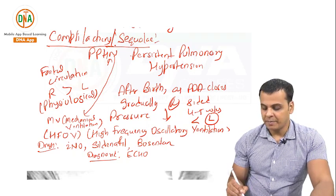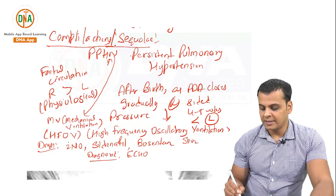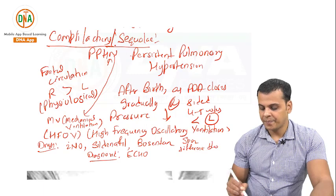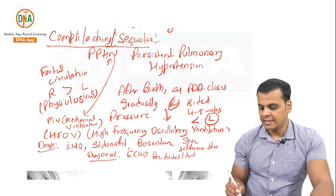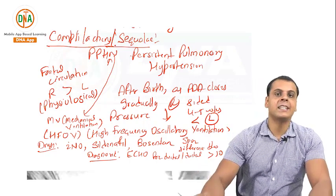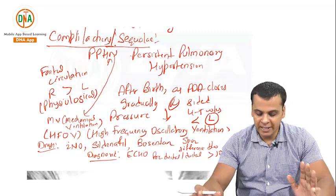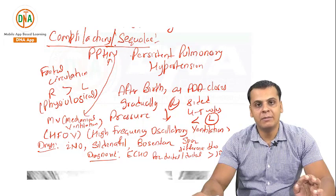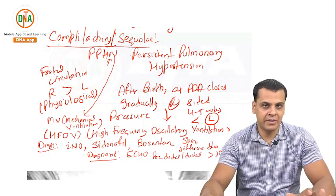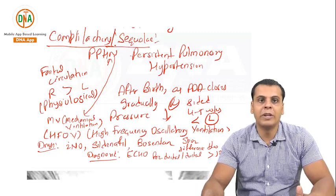Other drugs used include inhaled nitric oxide, sildenafil, and bosentan. PPHN is diagnosed by ECHO, which is the confirmatory test. Clinically, you can appreciate that the SpO2 difference between pre-ductal and post-ductal is greater than 10, which is a clinical pointer that the baby might have persistent pulmonary hypertension. Definitive diagnosis is by ECHO demonstrating increased right-sided pressure.